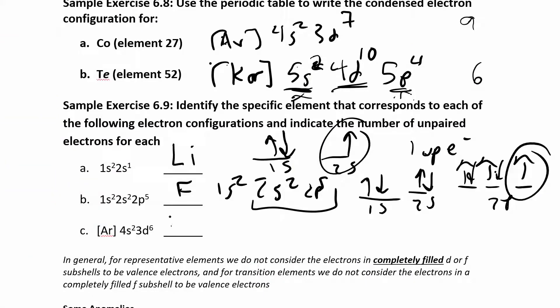So I know this is going to be iron, which is Fe. And then unpaired electrons. Let's just look at the valence electrons. This 4s2 is full. And then I have 1, 2, 3, 4, 5 d orbitals.